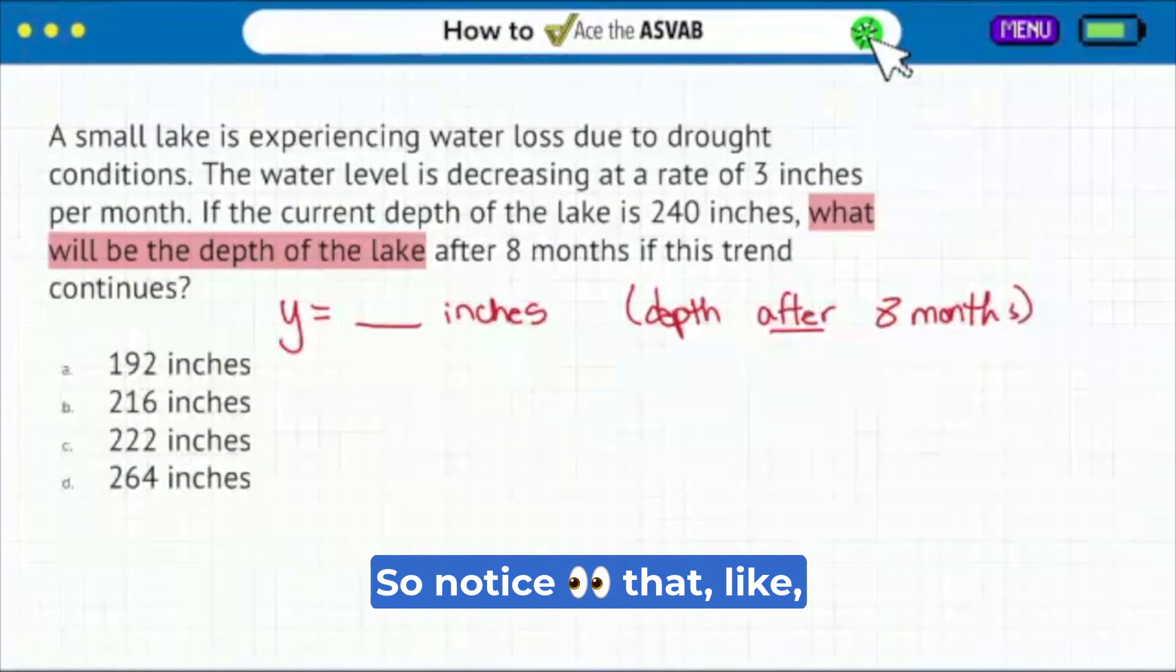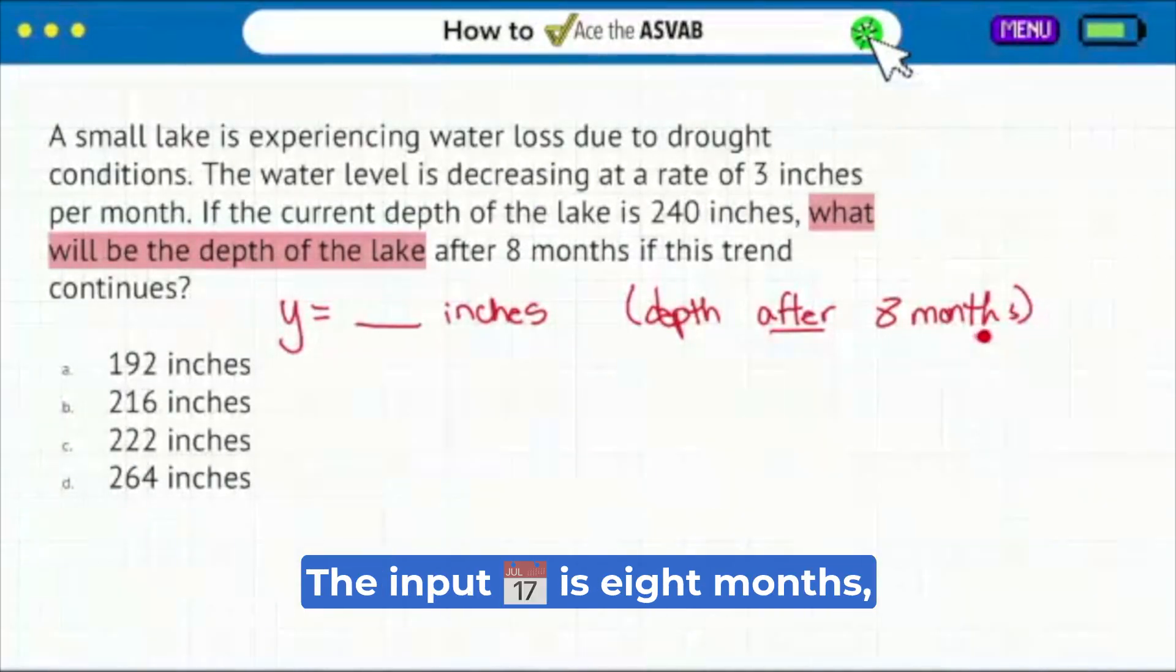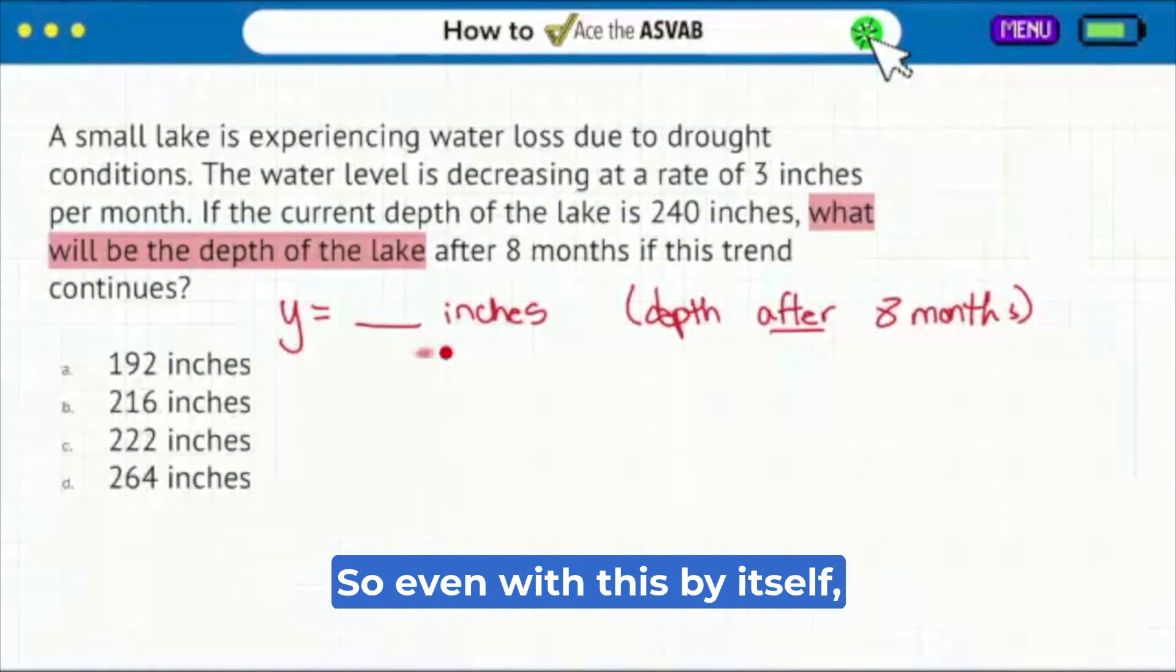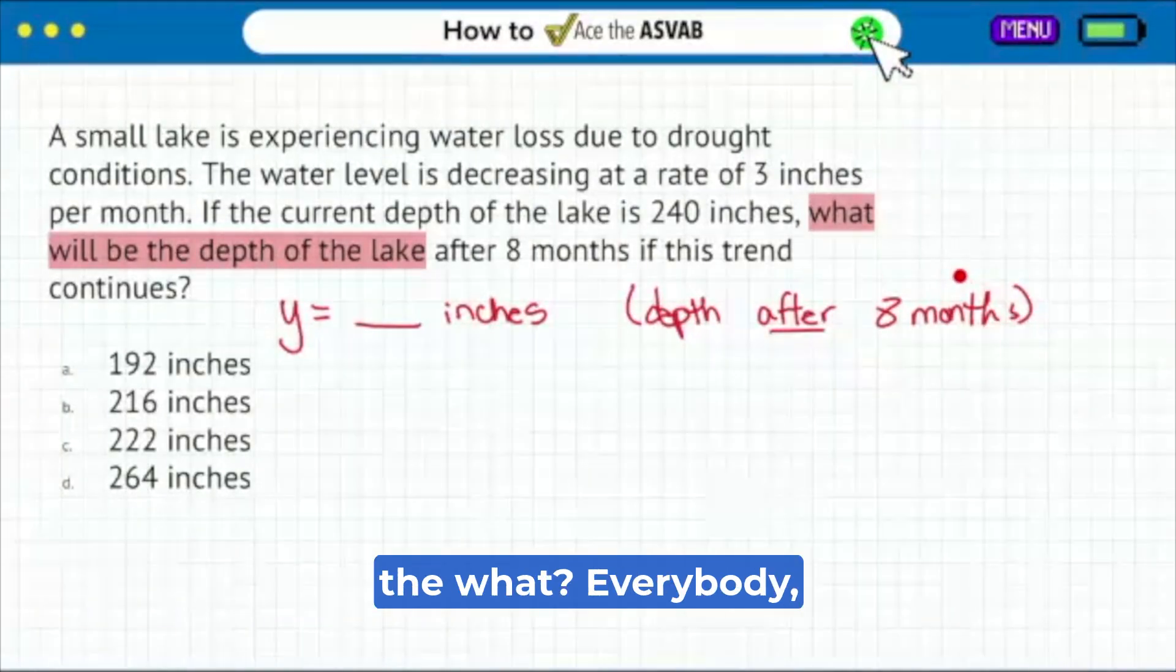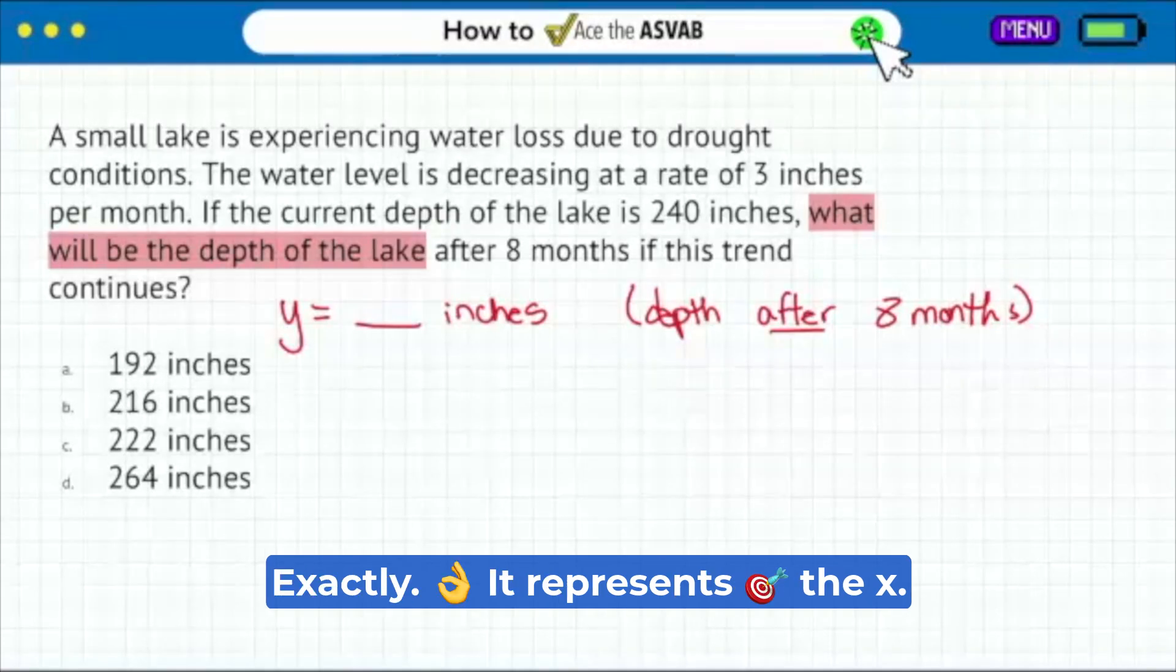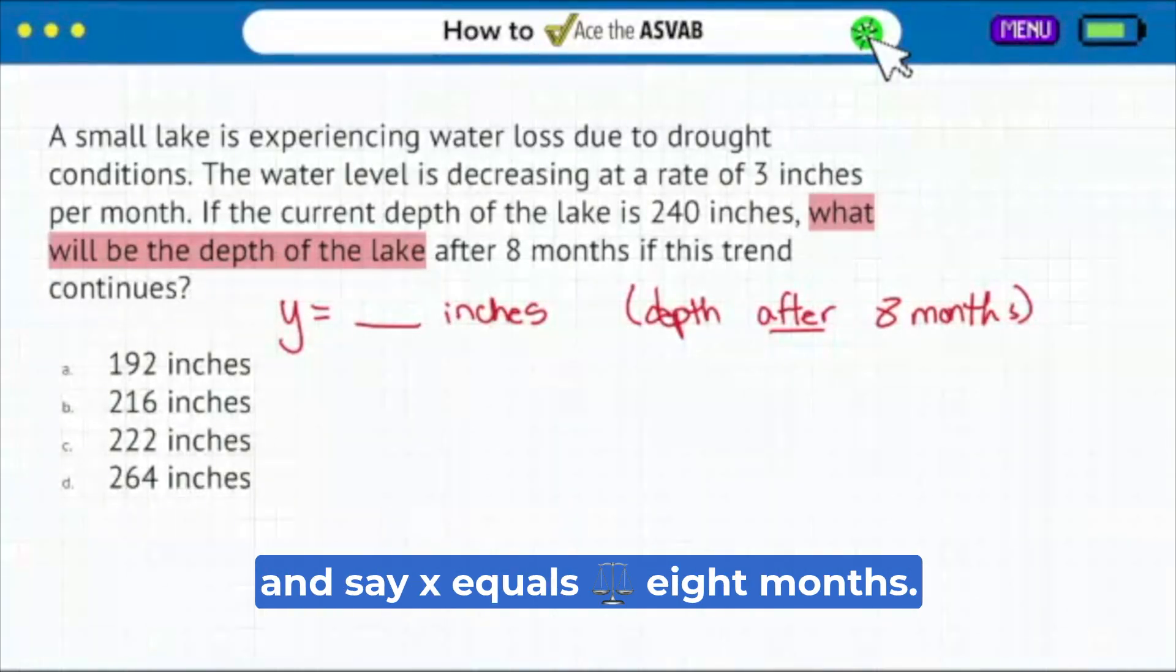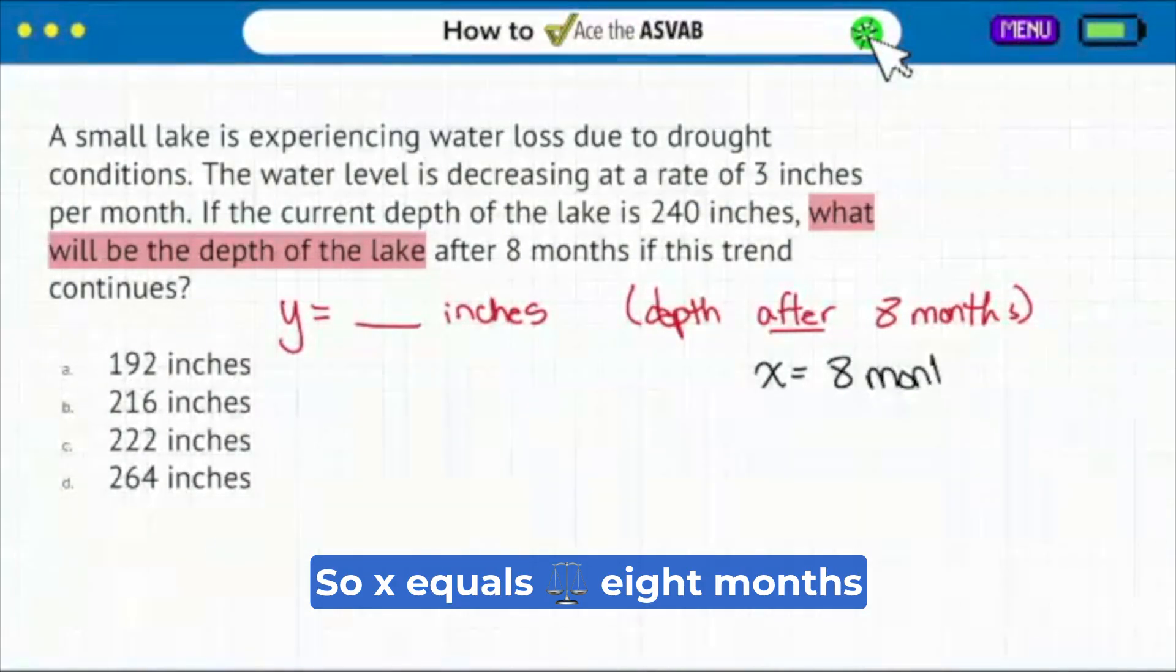Notice that this is what you're putting in. This is your input. The input is eight months, and the result is the water depth. So even with this by itself, you should be able to point out that the eight months represents the x exactly. It represents the x. So my party people, we'll go ahead and say x equals eight months.